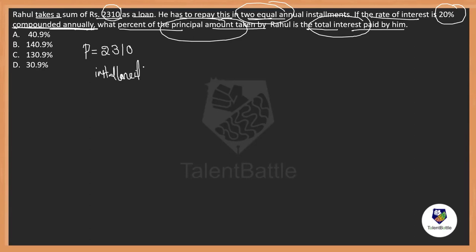Let us just imagine installment amount is some x. And he is going to pay in two equal installments and the rate of interest is 20% per annum. Two equal installments means he is going to pay for two years.